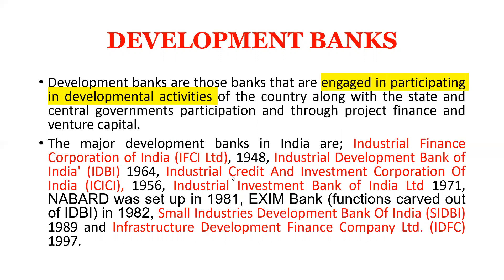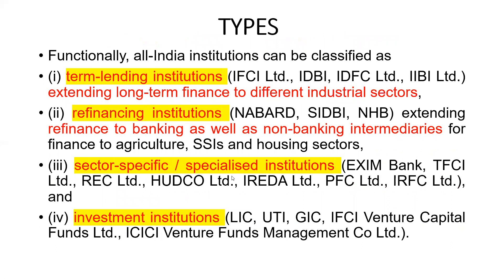The development banks we will discuss are: IFCI — Industrial Finance Corporation of India, established in 1948; NABARD, focused on agriculture and rural development, established in 1981; Export-Import Bank, called Exim Bank, established in 1982; and SIDBI, focused on MSMEs — Micro, Small and Medium Enterprises — established in 1989. There are four types of development banks: Term Lending Institutions such as IFCI and IDBI; Refinancing Institutions such as NABARD and SIDBI; Sector-Specific institutions like Exim Bank; and Investment Institutions such as LIC, UTI, and GIC.